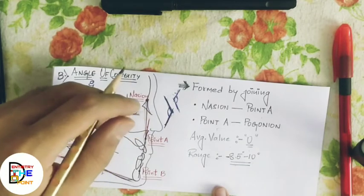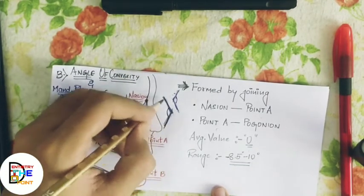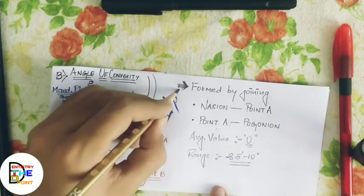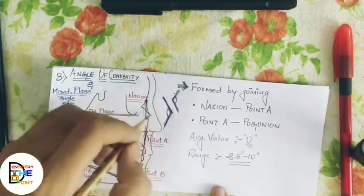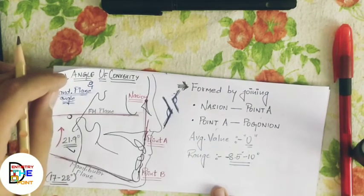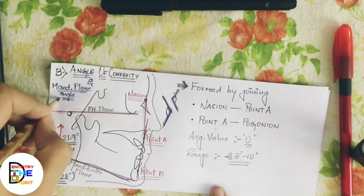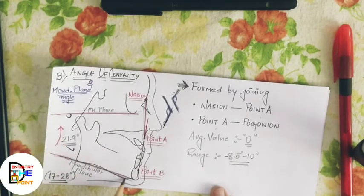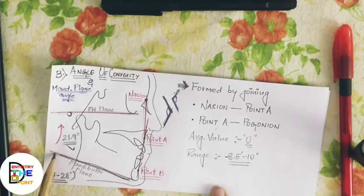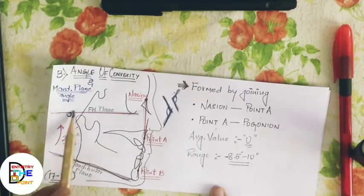If the angle of convexity is increased, the maxilla is more prominent; if the angle is decreased, the mandible is more prominent than the maxilla. The third skeletal parameter is the mandibular plane angle — the angle between the plane of the mandible (a line joining the lower border of the mandible) and the Frankfurt horizontal plane.